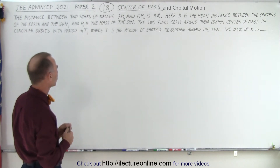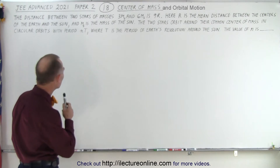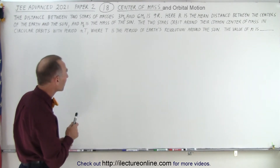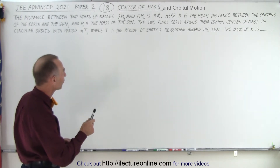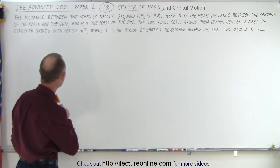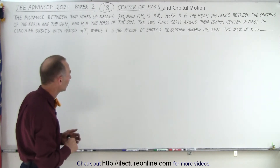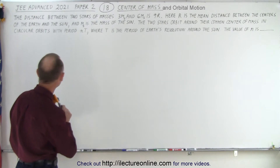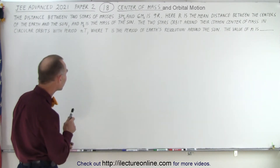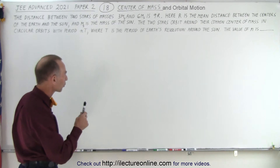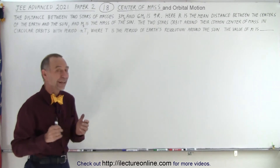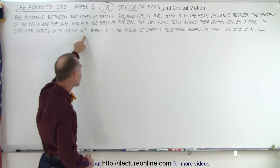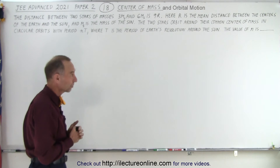Maybe I should have put orbital motion on there as well. The problem states the distance between two stars of mass 3m_s and 6m_s is 9r, where r is the mean distance between the centers of the Earth and the Sun, and m_s is the mass of the Sun. The two stars orbit around their common center of mass in circular orbits with period n times t, where t is the period of the Earth's revolution around the Sun, and the value of n is to be found — n being an integer number times the period t, the time it takes for the Earth to go around the Sun.